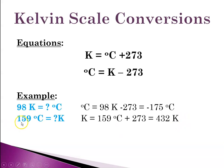How about in the other direction? 159 degrees C is equal to what in Kelvin? So Kelvin is C plus 273. So Kelvin here would be C, 159 plus 273. And that would give us a value of 432 Kelvin.